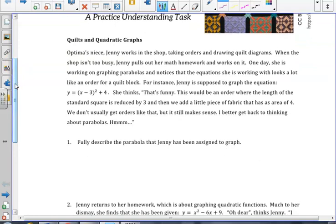When asked to describe what this graph would look like in number 1, we used our prior knowledge regarding maximum and minimum values and the axis of symmetry. After graphing the function, we determined that the axis of symmetry was the line x equals 3, and it had a minimum value at the point 3, 4.